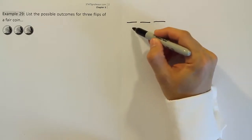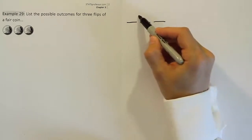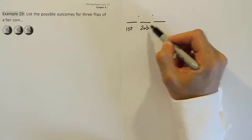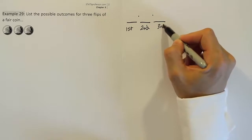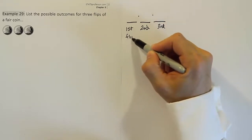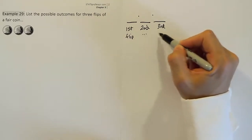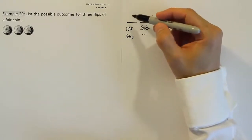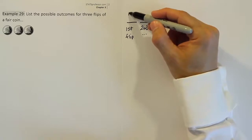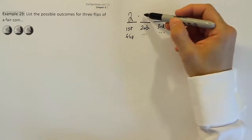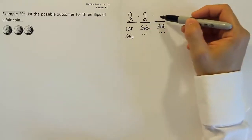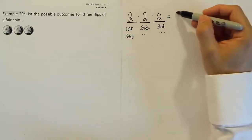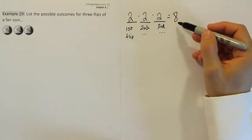The three simple events are going to be the first flip, second flip, and third flip. For each one of these, there's going to be a set of possible outcomes. For the first flip, how many outcomes are there? The coin will either be heads or tails, so there are only two possible outcomes. Likewise, two possible outcomes for the second flip, and two possible outcomes for the third flip. The total number of outcomes, therefore, is eight.